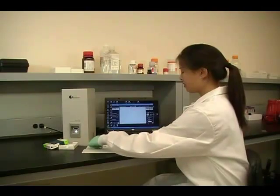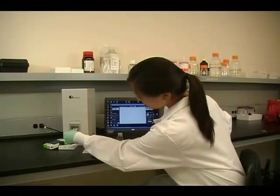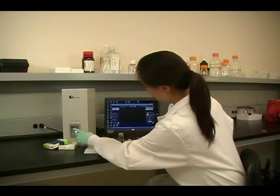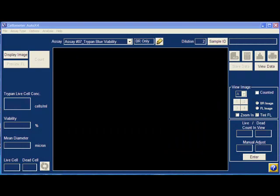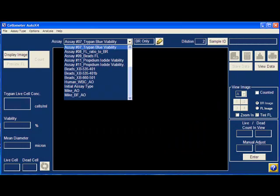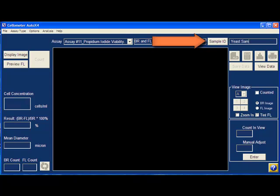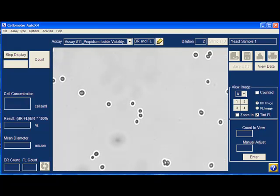The chamber is then inserted into the Cellometer Auto X4-10X cell counter. After selecting the assay type and entering the sample ID, the brightfield image will appear on the screen. After focusing, click Count.